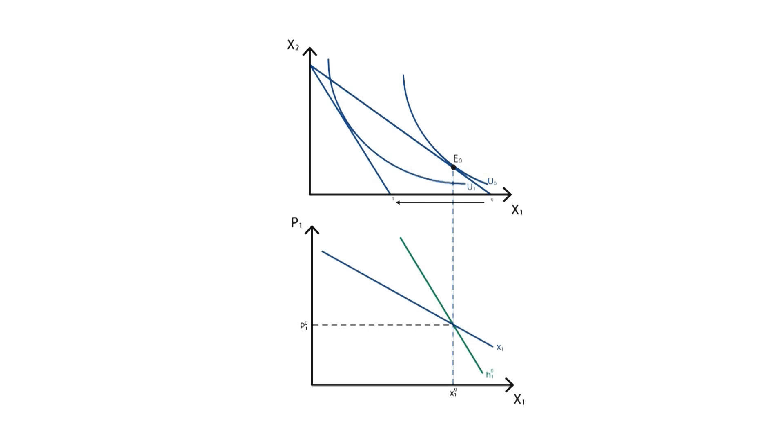Our new indifference curve will be set at a lower utility level due to the increase in the price of good x1, which decreases the amount of good x1 that can be bought. The new point where the restriction line is tangent to the utility curve will be noted as E1. This new equilibrium point corresponds to the new amount of good x1 bought considering the new price.